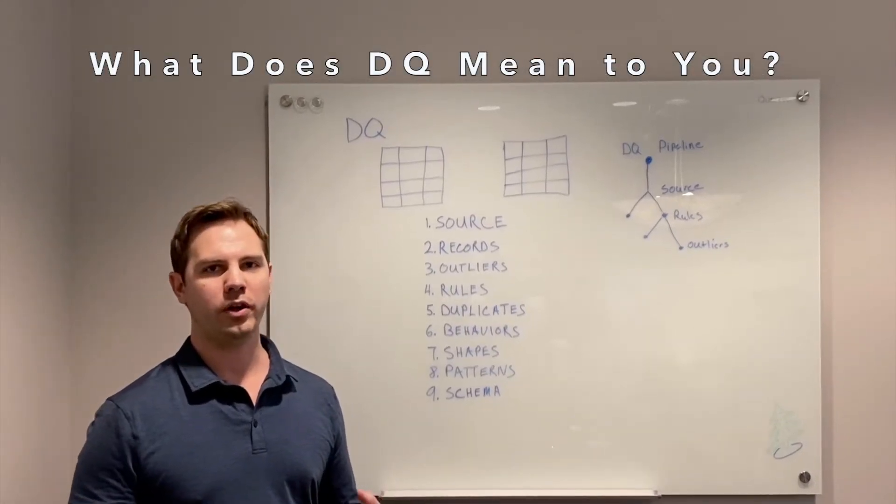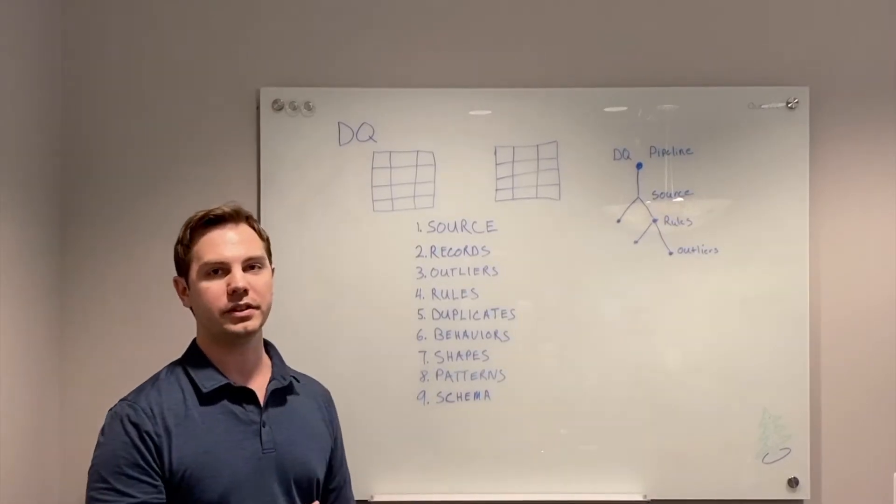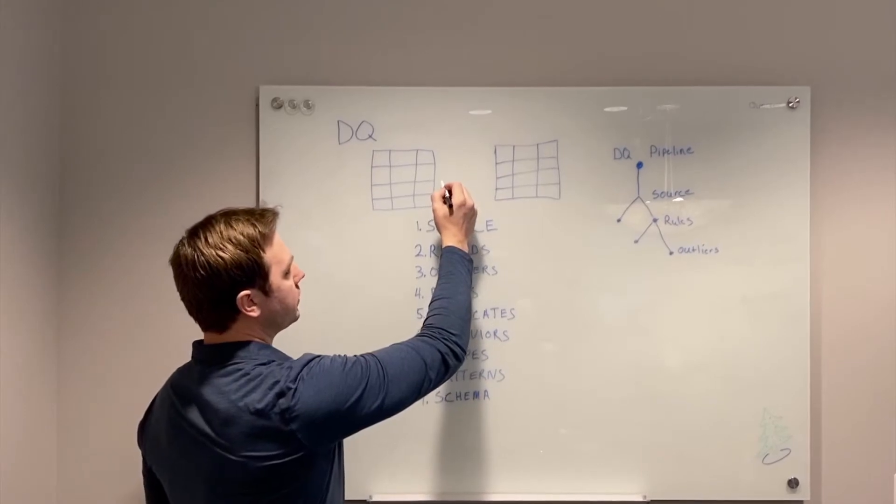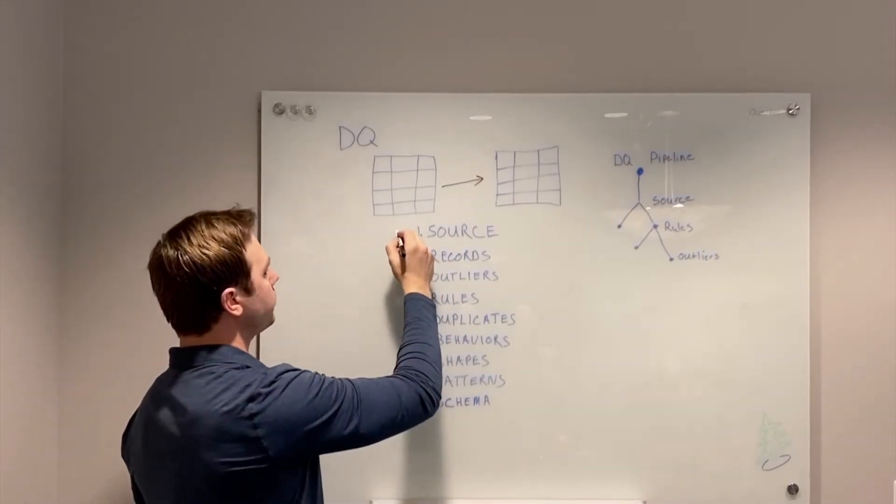What we're noticing at OWL while interacting with our customers about data quality is that it means something different to each person. So for some customers, data quality just means does the source table match to the target table? And we call that source to target validation.